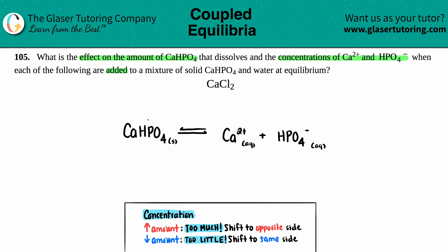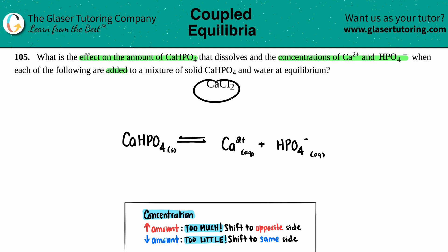Now we just have to figure out what's going on with the CaCl2. Remember, this is an ionic compound — it's a soluble compound, so it breaks down into its two ions. Calcium is in group two, so it's always a 2+ charge. If you're adding CaCl2, that means the concentration of Ca2+ is going to increase, and your ions are also going to increase.